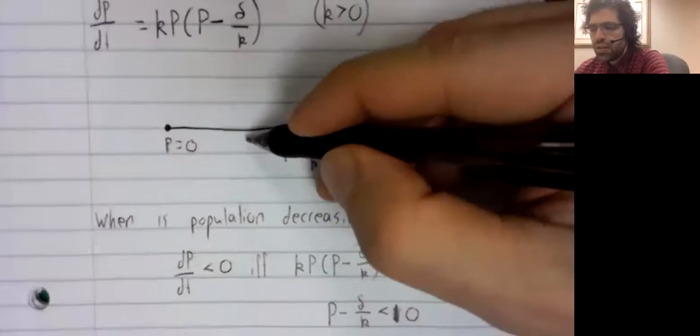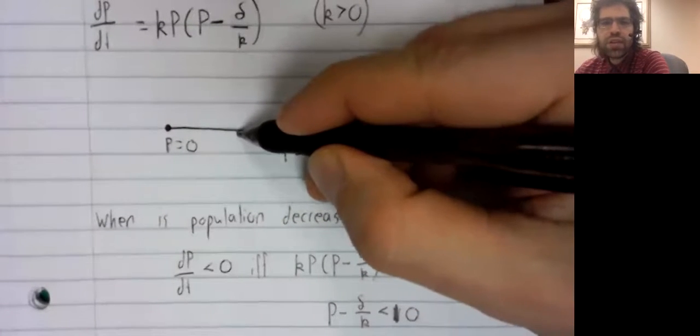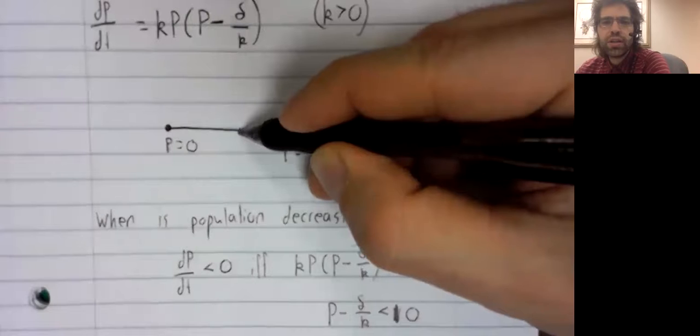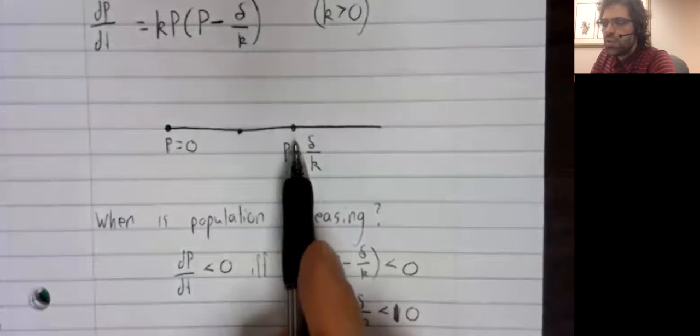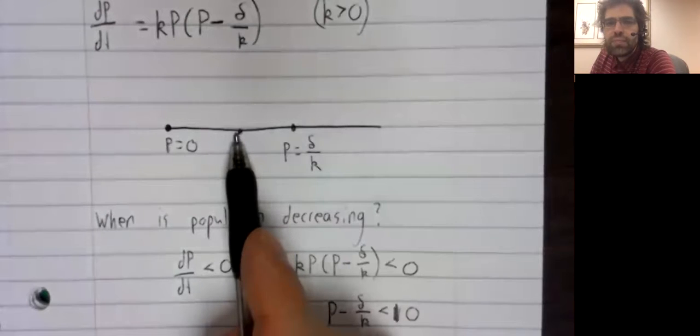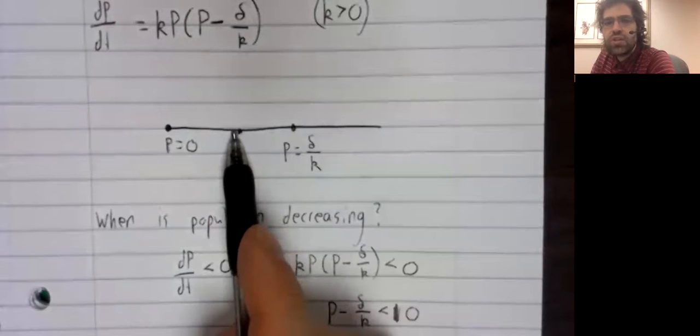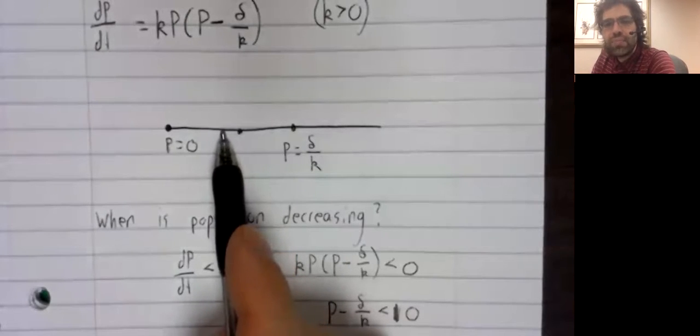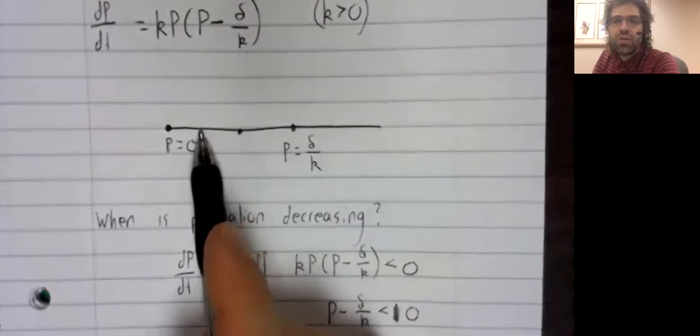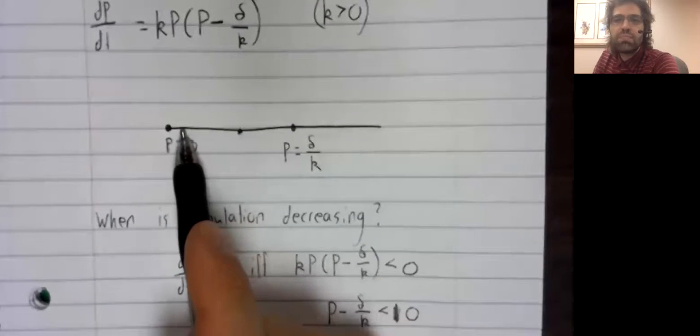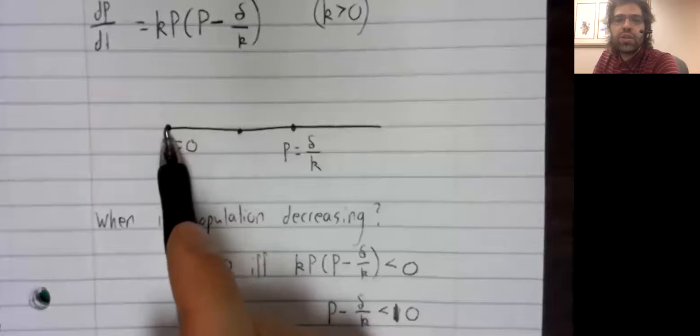What does that mean? Well, what if you have this as your initial population? You're less than delta divided by k, so the population decreases. As the population decreases, it stays less than delta divided by k, so the population keeps decreasing until it reaches extinction.